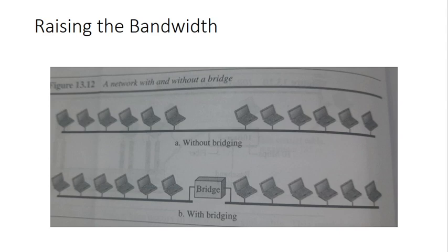Here, each station will be offered a total capacity, a bandwidth capacity of 10 divided by 7 instead of 10 divided by 12. Here, in the first one, in the first picture, the standard Ethernet, these stations, there are 12 stations. So the total bandwidth capacity of 10 MBPS will be shared by all these 12 stations. So it will be 10 divided by 12.